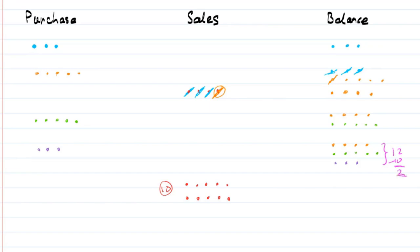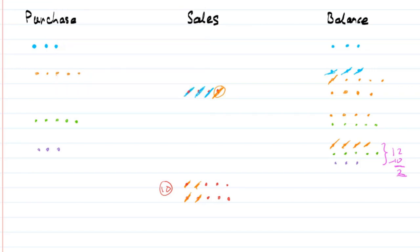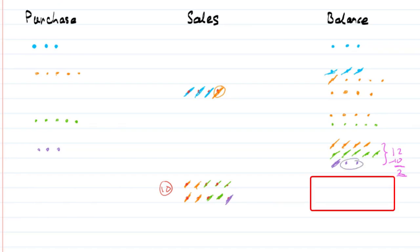We're dealing with FIFO, so we sell from the orange batch first. We have four orange units, which cannot satisfy an entire order of ten, so we use up all four. The next batch is the green batch — we have five green units but still have six more to sell, so we cross off all five. We only have one more to sell, and the only remaining batch is the purple batch. We take one from the purple batch, and we're left with two units from the purple batch.